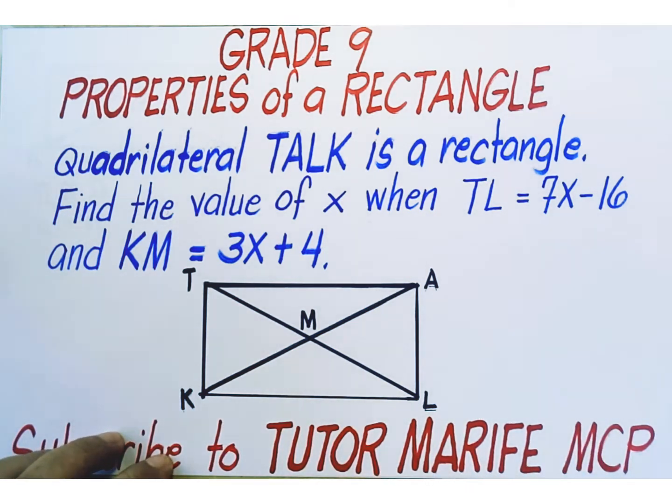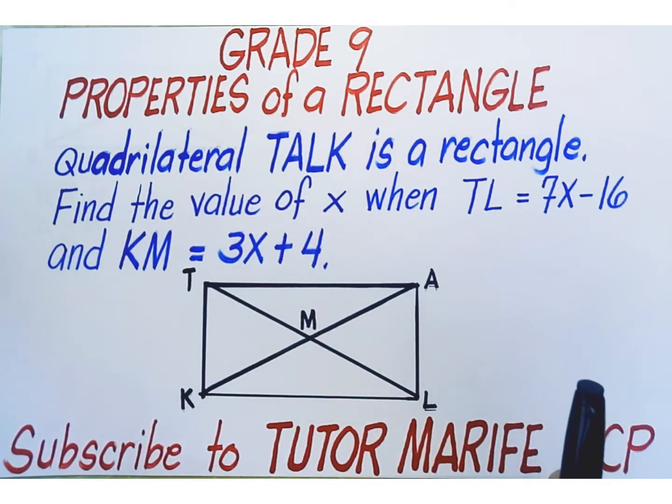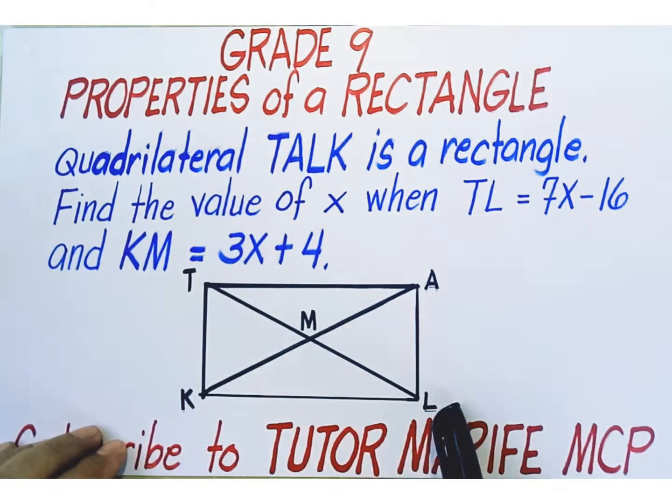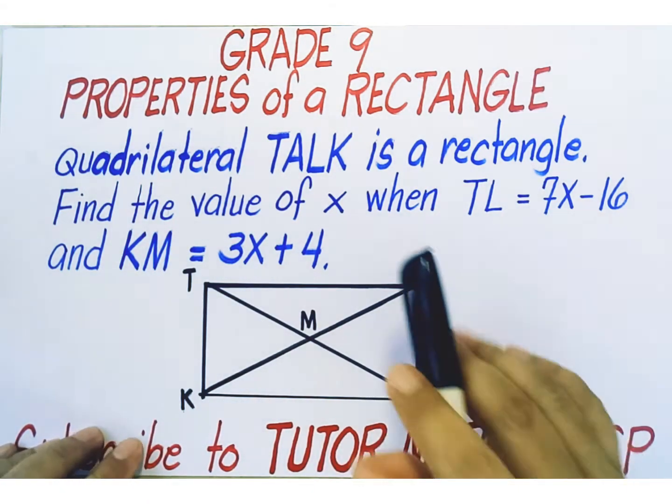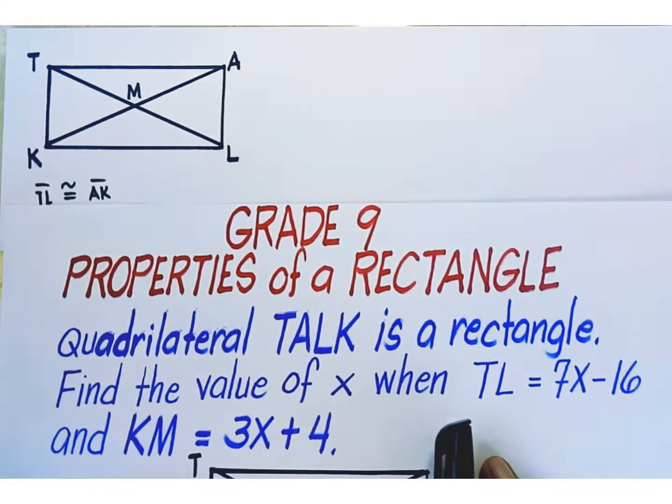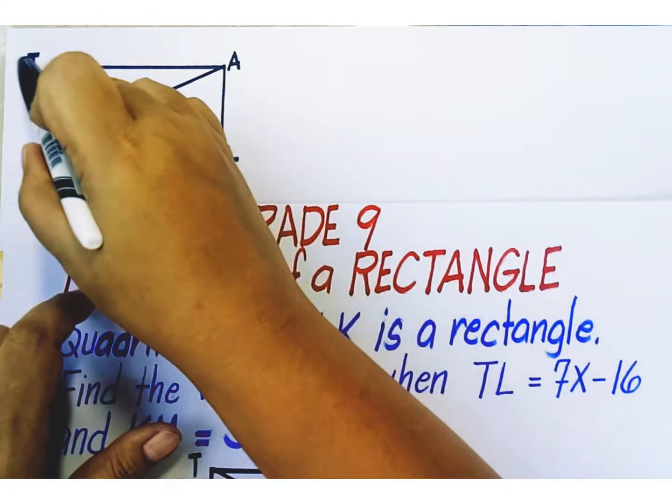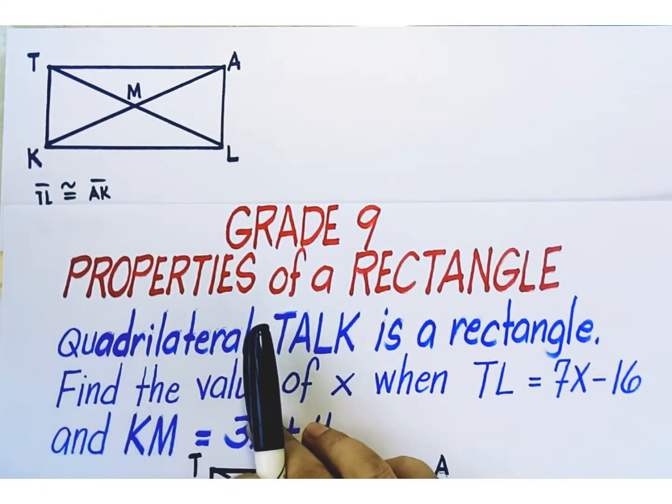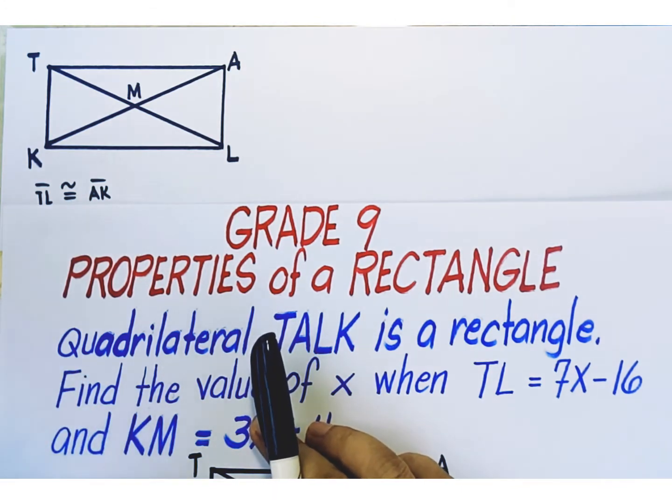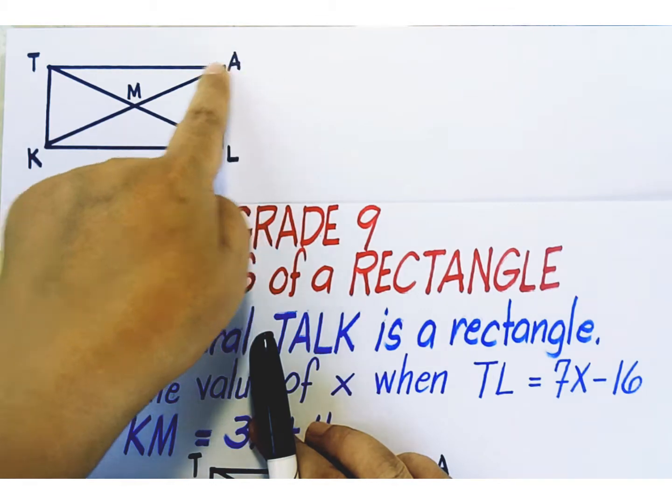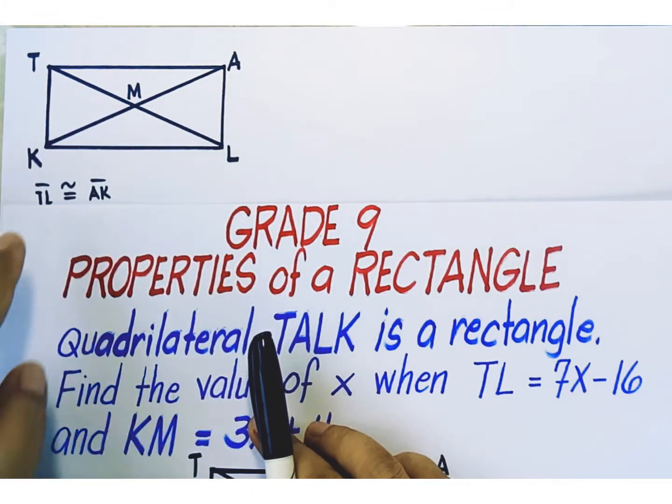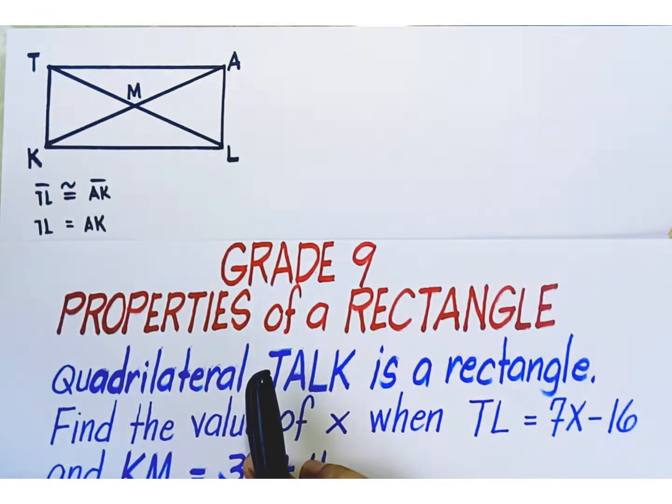So how do we form our equation for x? We're going to apply the property of a rectangle stating that the diagonals of a rectangle are congruent. Therefore, diagonal TL is congruent to diagonal AK. When we say that two diagonals are congruent, we mean that their lengths are equal. Therefore, TL is equal to AK.